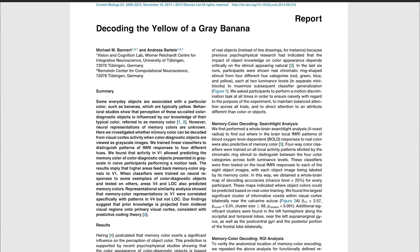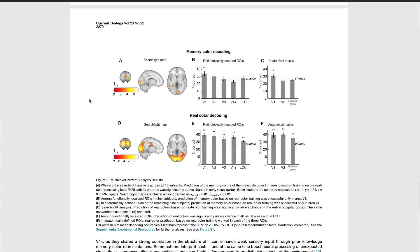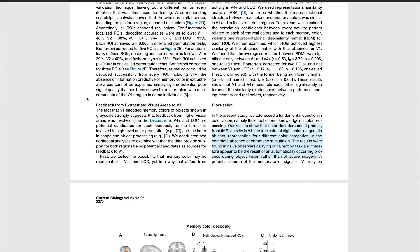Neuroscientists Bannert and Bartles, in a 2013 article in Current Biology, authored a piece entitled 'Decoding the Yellow of a Gray Banana.' They investigated whether the sight of a black and white photo automatically elicited the same synaptic response that a color photo would — specifically, whether brain activity encoded to colors could be elicited with a black and white image. They attached subjects to MRIs, showed them black and white images, measured what area of the visual cortex was activated, then showed them the same image in color. They discovered that the primary visual cortex is not only associated with recognizing objects, but also with storing that information, helping us understand how we make out objects in difficult environments such as fog, overcast weather, or indoors.